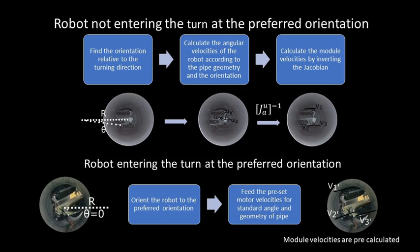The holonomic motion also allows the robot to come to a standard preferred orientation while turning in elbows, such that the speed in driving modules can be given some standard values according to the geometry of the turn. This reduces the computation load as the calculation is based only on the radius of curvature and the pipe angle. Exact speeds do not need to be calculated for individual modules.